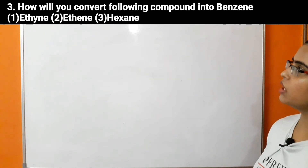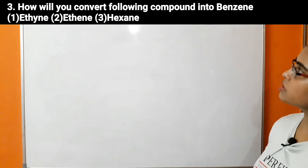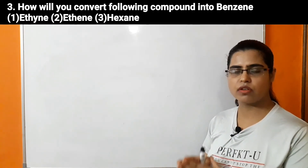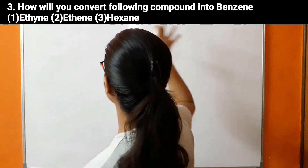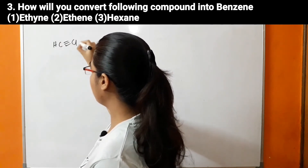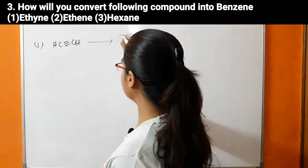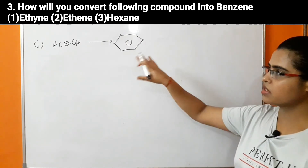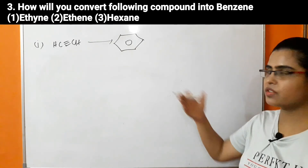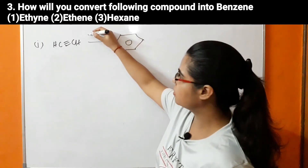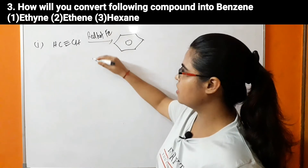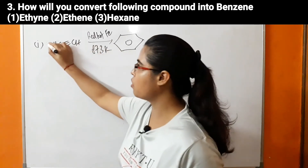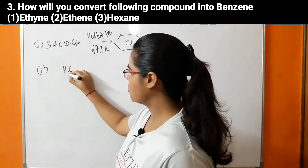Now the third conversion problem. We have to convert the following compounds into benzene. First, convert acetylene into benzene. The starting material is CH≡CH and the final product is benzene. This conversion is very easy — we studied it right now. Cyclic polymerization takes place in the presence of red hot iron as catalyst at 873 Kelvin, and three moles of acetylene directly give benzene.